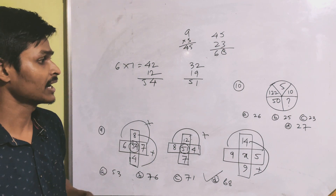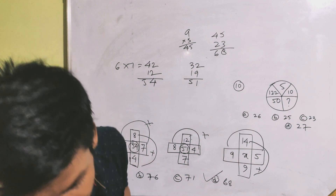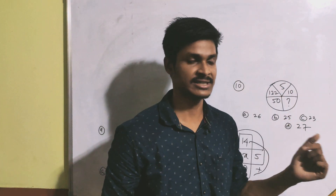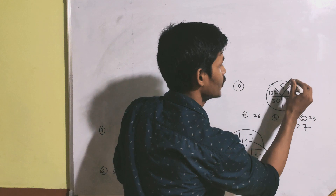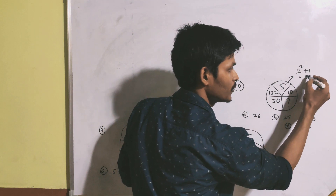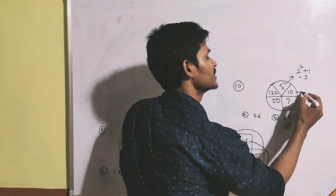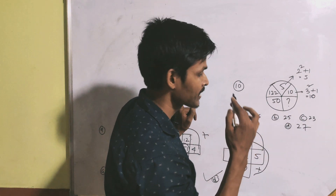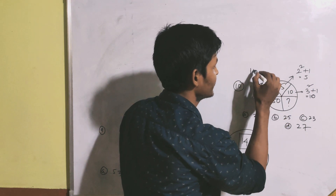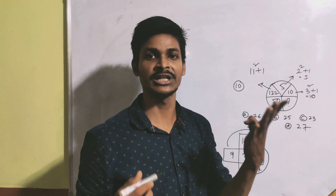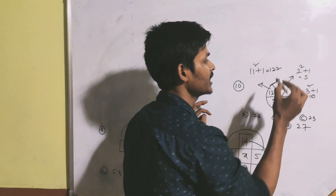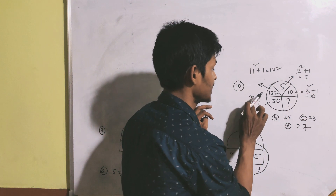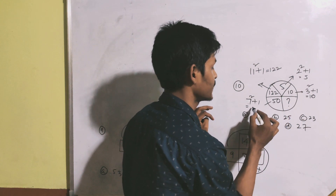Next question number 10: the pattern is n squared plus 1. So 2 squared plus 1 equals 5; 3 squared plus 1 equals 10; 11 squared plus 1 equals 122; 7 squared plus 1 equals 49 plus 1 equals 50.